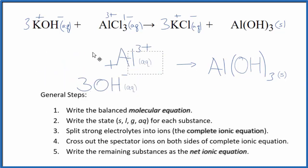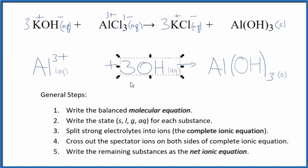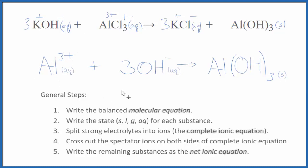Often you'll see the positive ion put first. It doesn't really matter. Maybe it looks a little bit nicer. Either way, this is the balanced net ionic equation for KOH plus AlCl3. This is Dr. B. Thanks for watching.